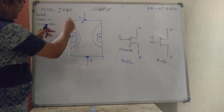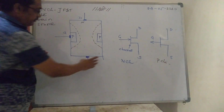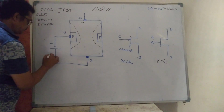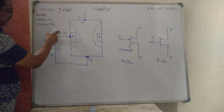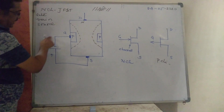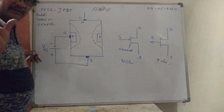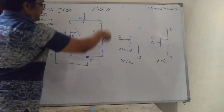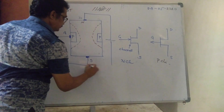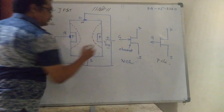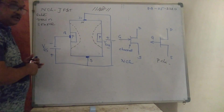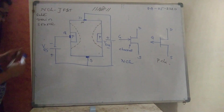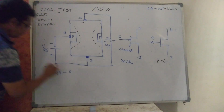Now working. We connect one supply between Gate and Source (VGS) and one supply between Drain and Source (VDS). JFET is always a reverse-biased operated device, so minus is connected to the P region. First case: VGS equal to zero. When VGS is zero, the channel is full of electrons.